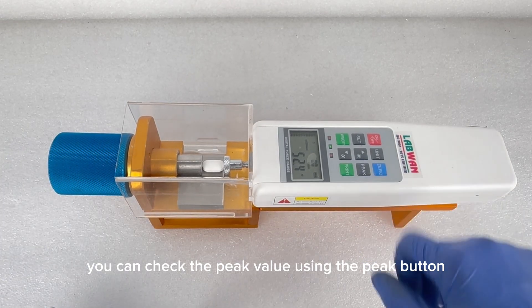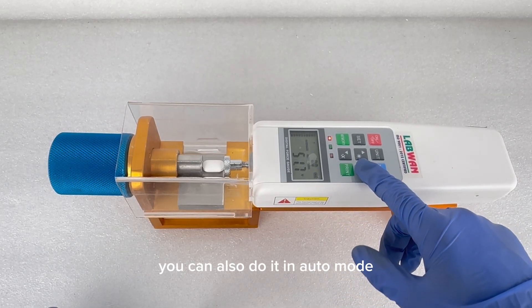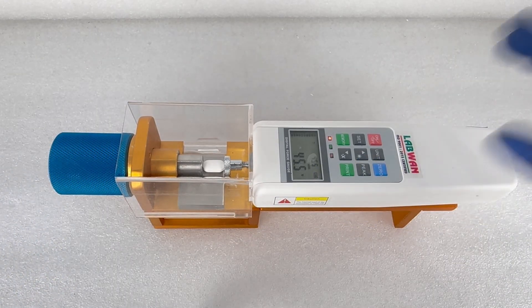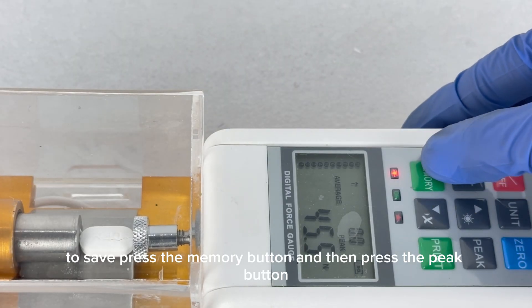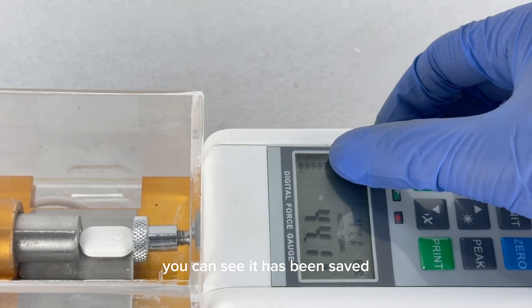You can check the peak value using the peak button. You can also do it in auto mode. To save, press the memory button and then press the peak button. You can see it has been saved.